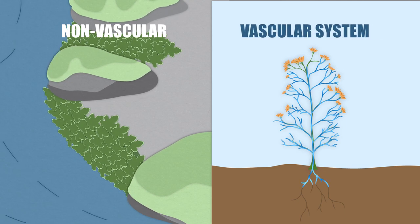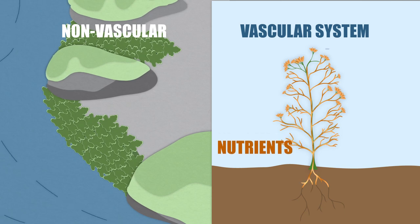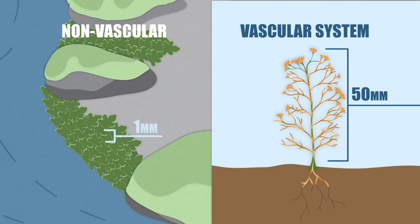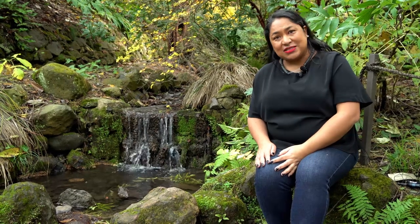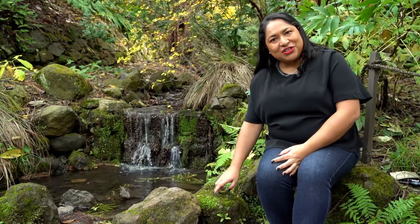A vascular system is how water and nutrients are moved around a plant. Without this plumbing plants can't grow very large because some parts won't get water. The first plants were similar to mosses and liverworts that we see today. They also don't have real roots.